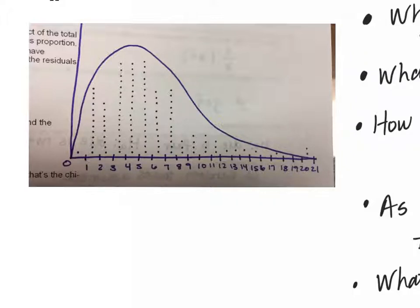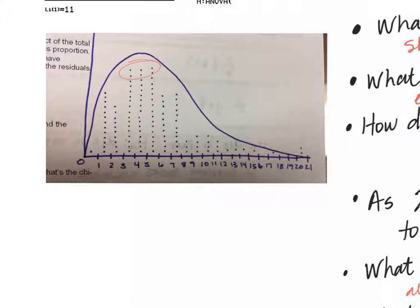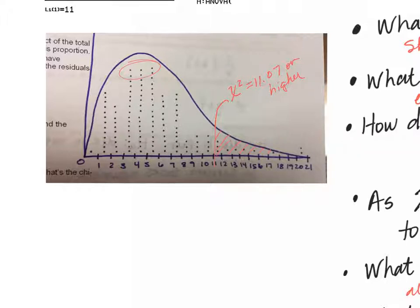Yesterday I said it kind of looks like it's centered around four or so. Look how nicely it came out, and of course it was very skewed right. She took all of the values and tallied them into each of those categories. We said if you had a chi-squared value of 11.07 or higher, that would be an unusual value. Probably all of the ones up there have a p-value smaller than 0.05 and we ended up rejecting the null hypothesis. All day we had 10 people reject.